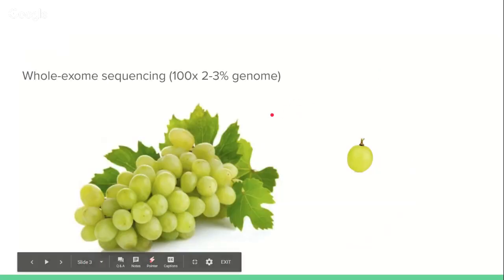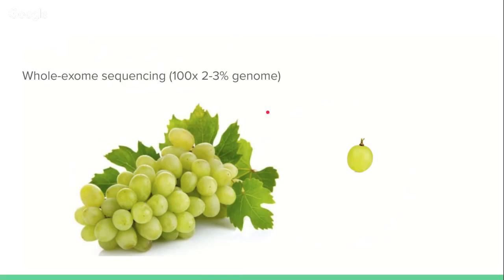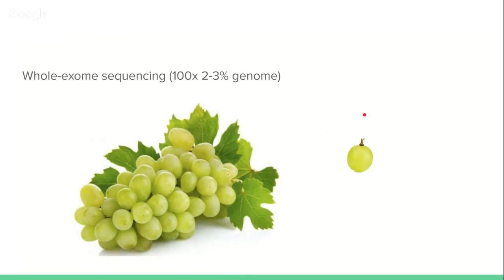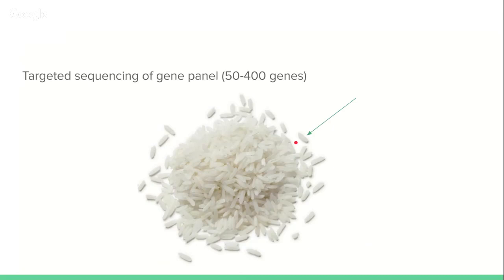In comparison, whole exome sequencing — which sequences about two to three percent of the genome at around 100x coverage — would be the size of a grape. So each exome for each individual or sample would be one grape, and in volume you can put as many grapes as your machine can handle to extract the sequencing juice.